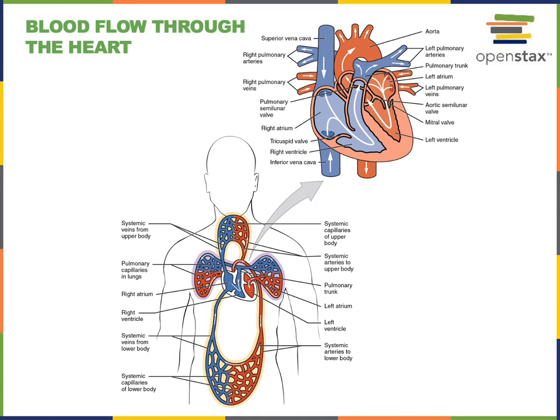The pulmonary circuit is where oxygen moves into the blood — where blood becomes oxygenated. This occurs in the pulmonary capillaries, which are the location where exchange of gases occurs: oxygen moves into the blood and carbon dioxide moves out of the blood.